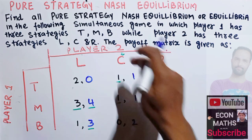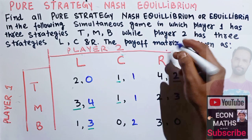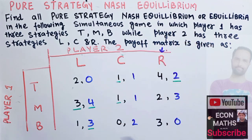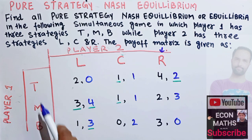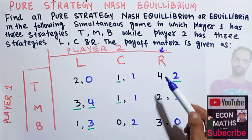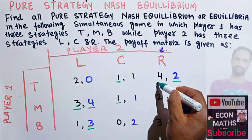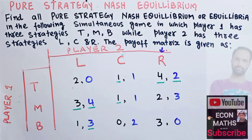Now suppose Player 2 chooses strategy R. Player 1 has three options: T gives 4, M gives 2, and B gives 3. The biggest payoff is 4, so Player 1 will choose T, and we underline that.